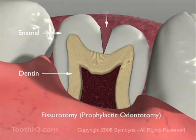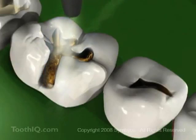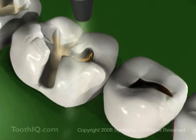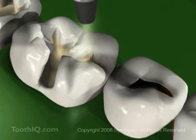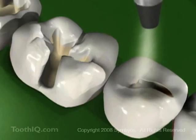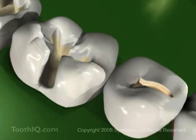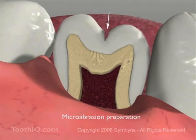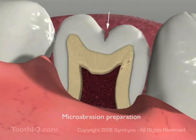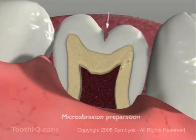The grooves can also be cleaned out less invasively with a microabrasion handpiece, which sprays a stream of abrasive particles deep into the pits and fissures to remove plaque bacteria and roughen the enamel surface. Since microabrasion doesn't completely eliminate the deep, narrow crevices, it is usually followed by placement of a dental sealant. If the preparation of the groove extends into the dentin layer of the tooth, a filling is placed instead.